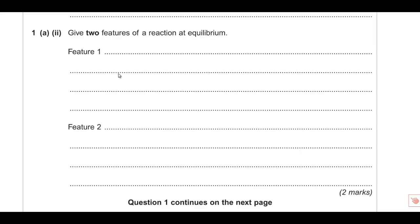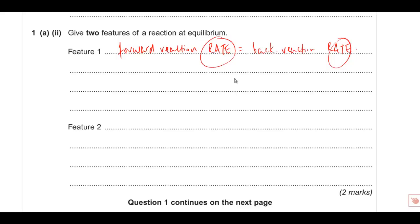For two features of a reaction at equilibrium: first, the forward reaction rate equals the backward reaction rate. You must include the word 'rate' - just saying 'forward reaction equals backward reaction' won't get the mark. That's where the term 'dynamic equilibrium' comes from. Second feature: concentrations remain constant. Not 'amount' - specifically concentrations of reactants and products remain constant.